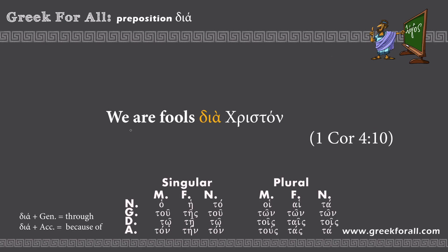A short but meaningful example from Apostle Paul: 'We are fools dia Christon.' Our preposition dia is followed by 'Christon,' which means Christ. The ending '-on' is the accusative ending for masculine singular, so dia plus accusative means 'because of.' Translation: 'We are fools because of Christ' — or on account of Christ, or for the sake of Christ. Paul reminds us that Christians became a spectacle for the world, and sometimes in the world's eyes we are fools because of our faith in Christ.